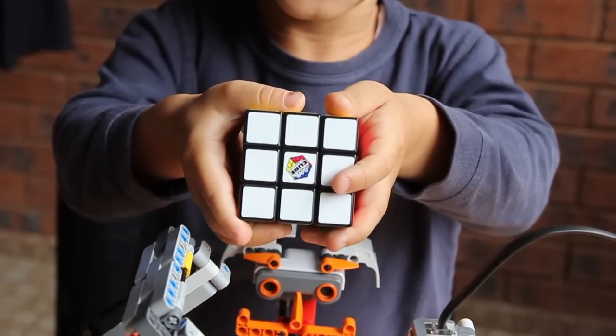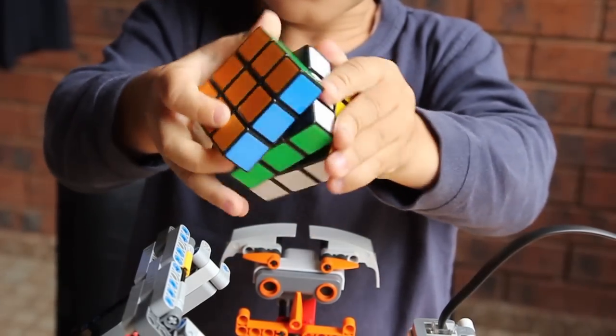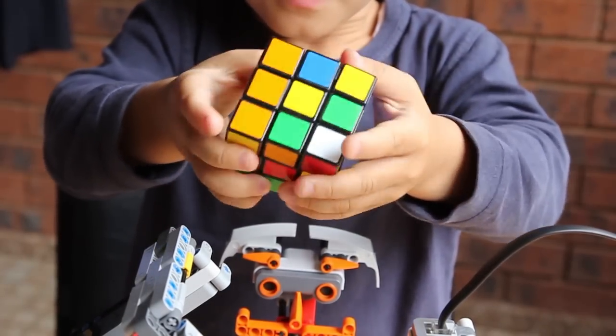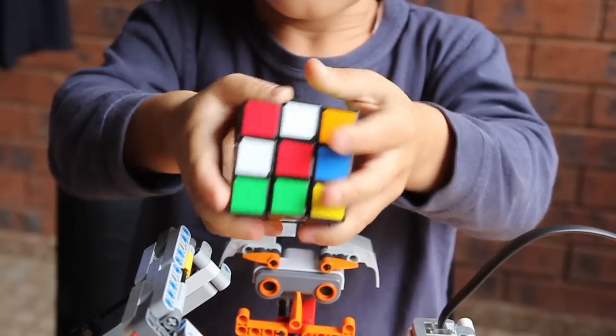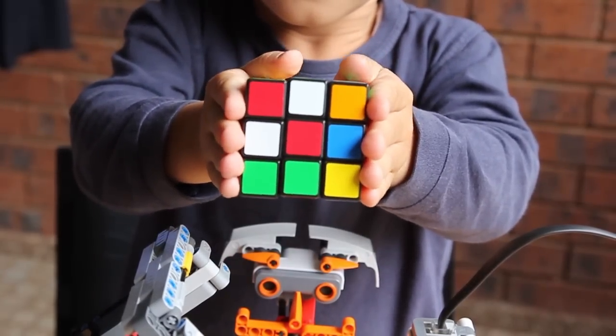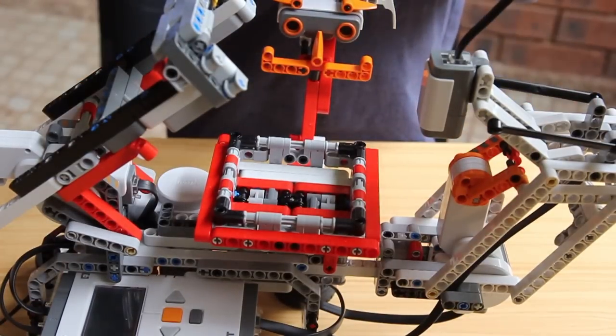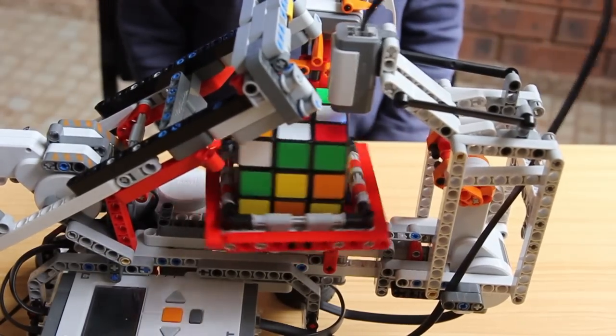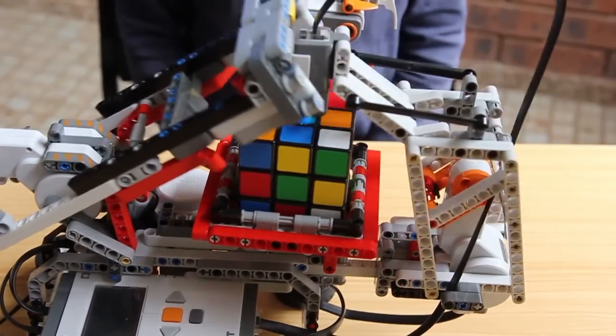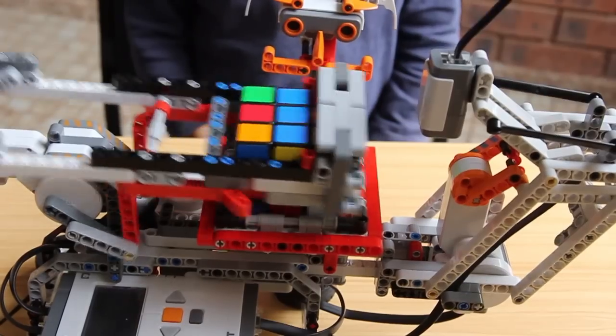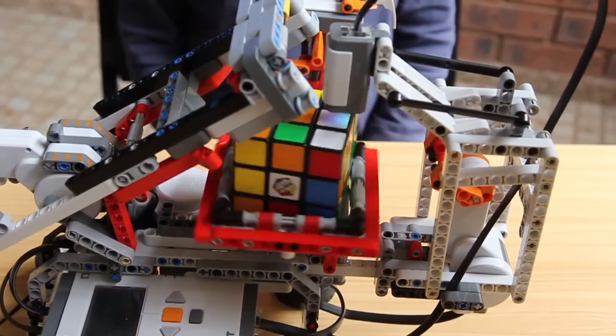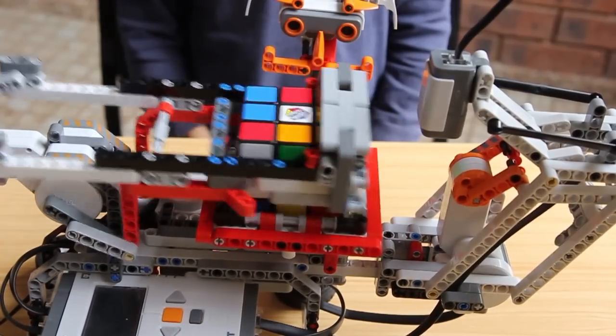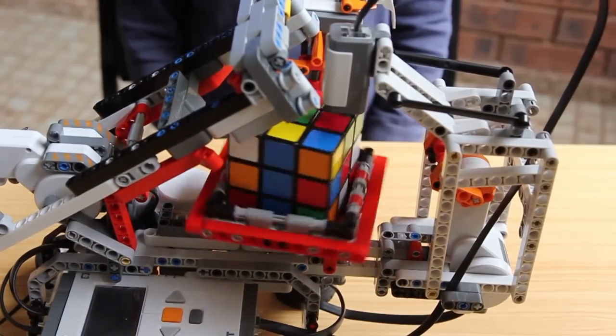The first thing you need to do is jumble up the cube. Once you have jumbled up your cube, place it in the basket. Right now it's scanning the cube.